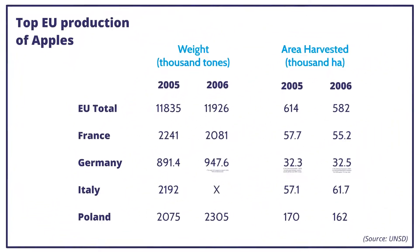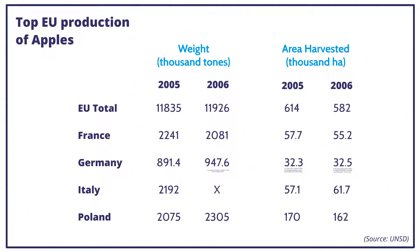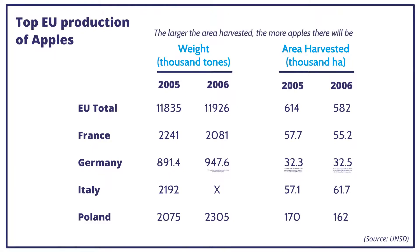The question establishes a relationship between the area harvested for apple and the weight of the apples harvested. The larger the area harvested, the more apples there will be, the thinking goes. We are going to use three pieces of information from the table.